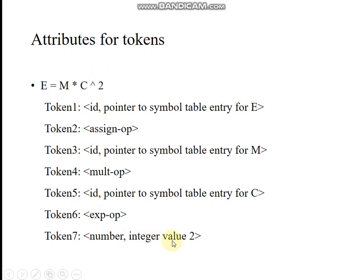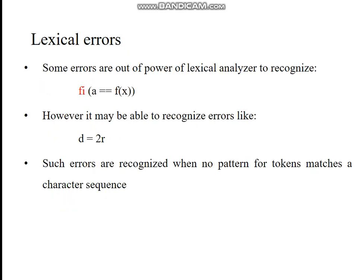The number '2' is a number token, and its constant value is two. These are the tokens and lexemes for this statement. Note that the lexical analyzer will not find some kinds of errors — for example, a misspelled 'if' statement written incorrectly will be recognized as an identifier, not flagged as an error. If you put 'i' in front it becomes a keyword, but the lexical analyzer does not identify the error here because this would be a valid identifier.